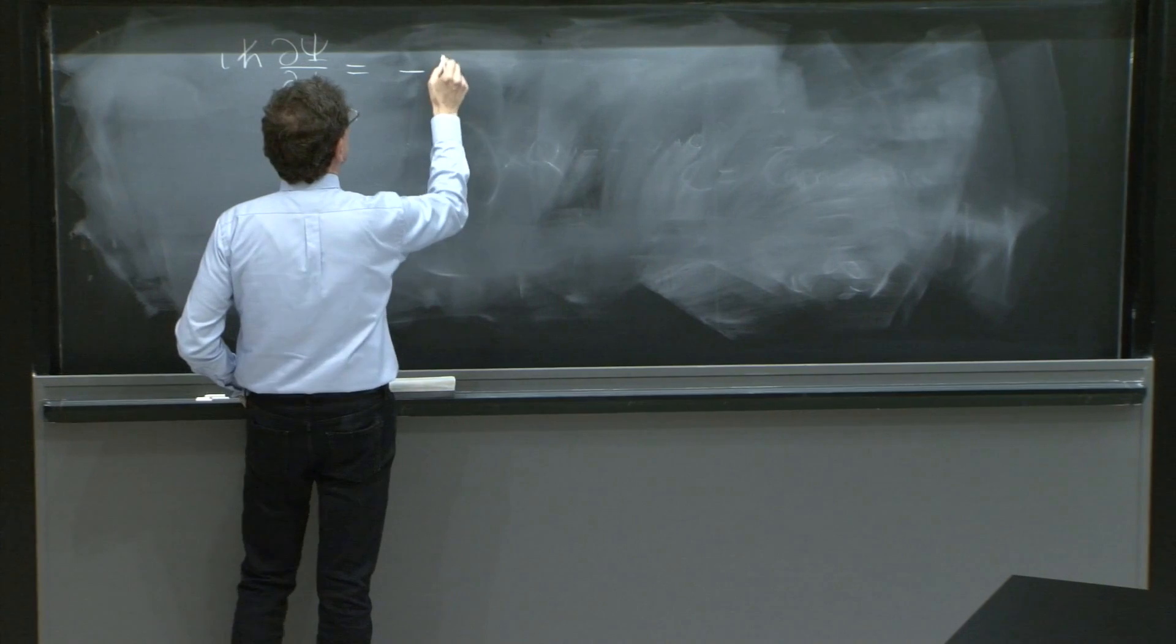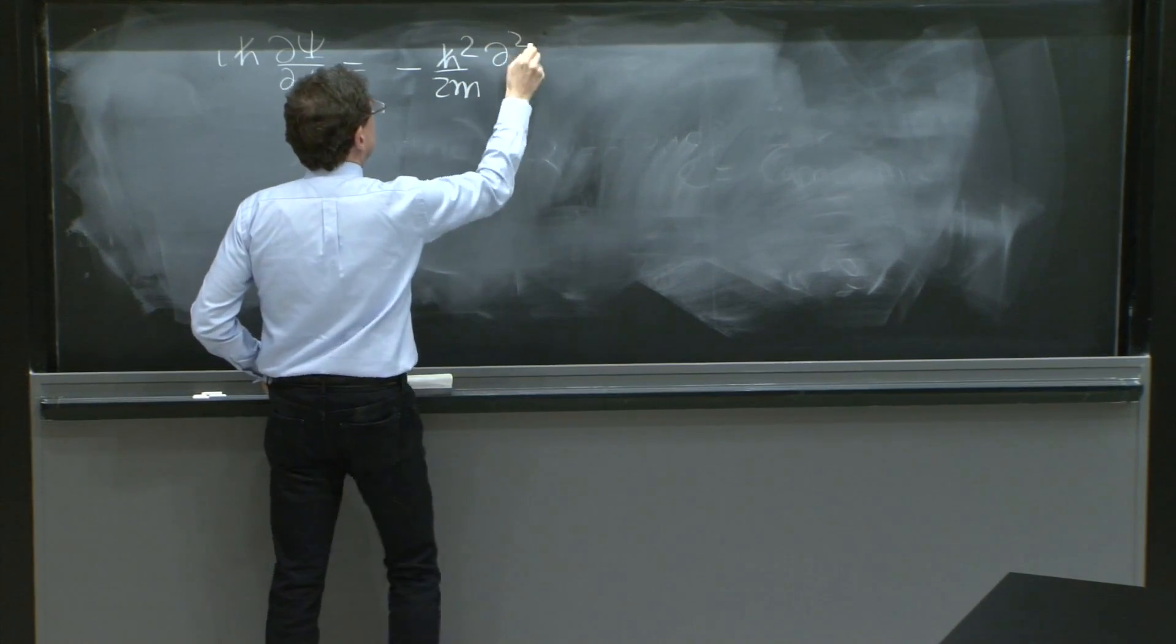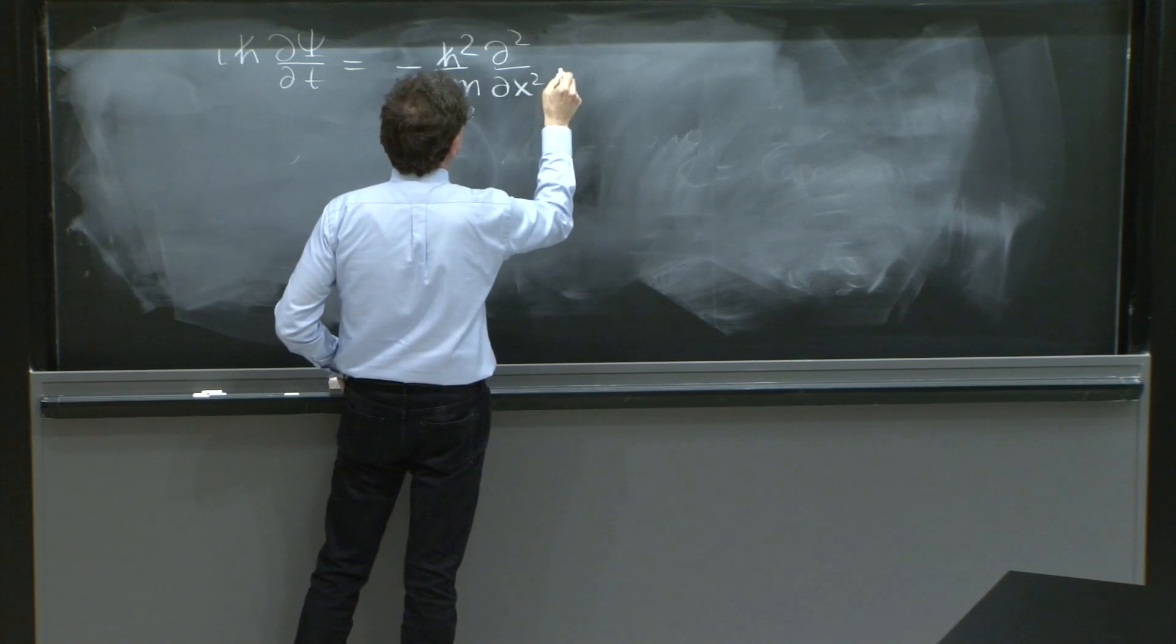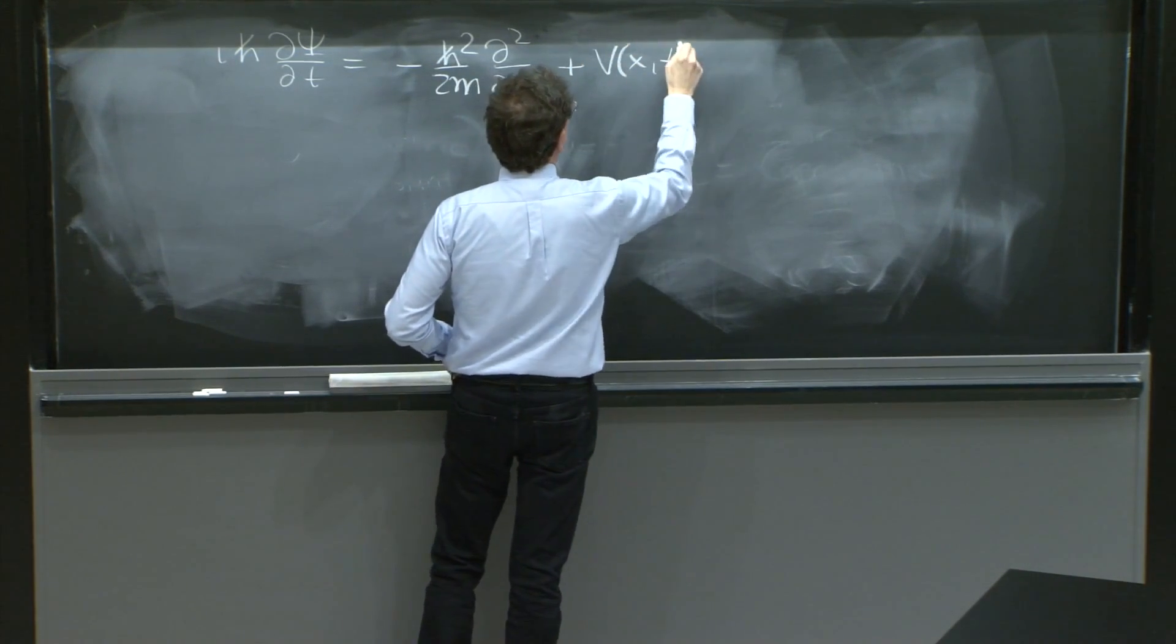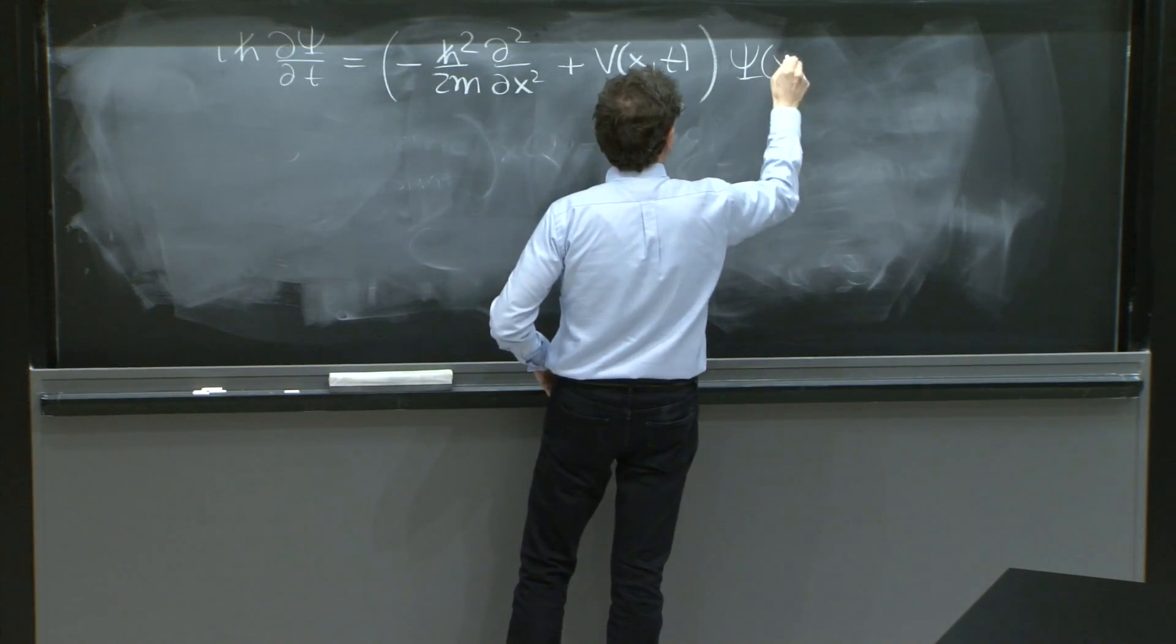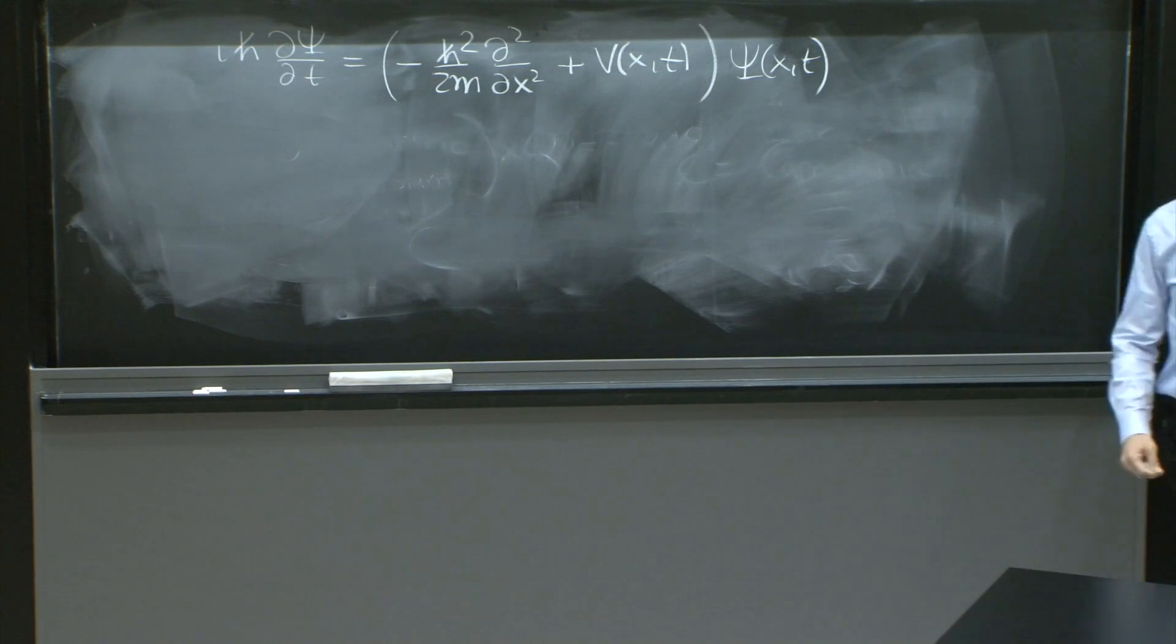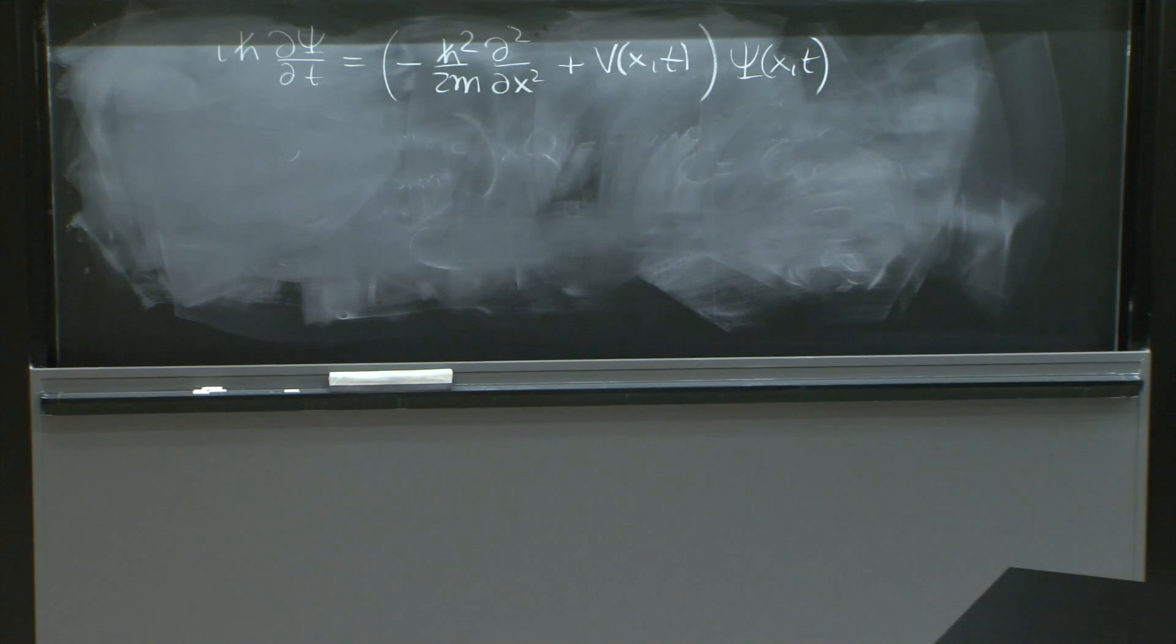And then we added the potential to make it interacting. And that way we motivated the Schrodinger equation, which took this form of x and t, psi of x and t. This is the dynamical equation that governs the wave function.